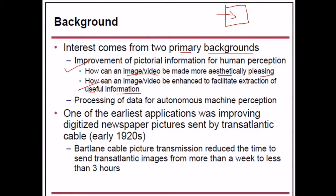One of the earliest applications was improving digitized newspaper pictures sent by transatlantic cable. This was in the early 1920s. The Bartlein cable picture transmission system reduced the time to send transatlantic images from more than a week to less than three hours — this was the initial application in the history of image processing.